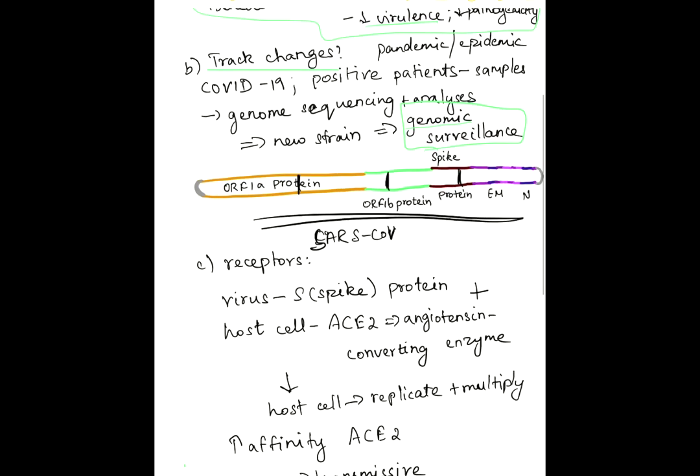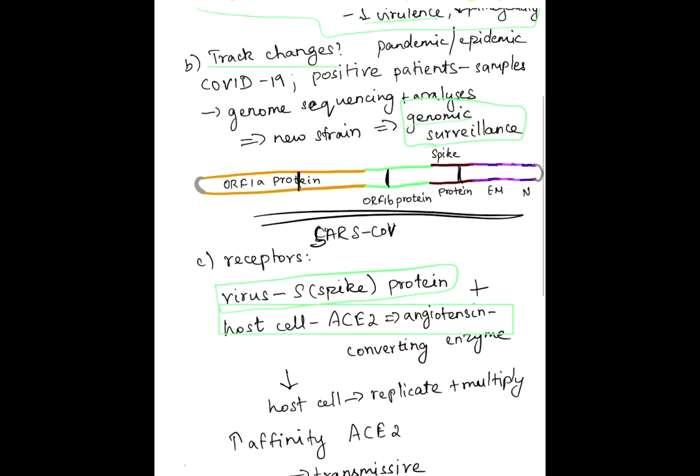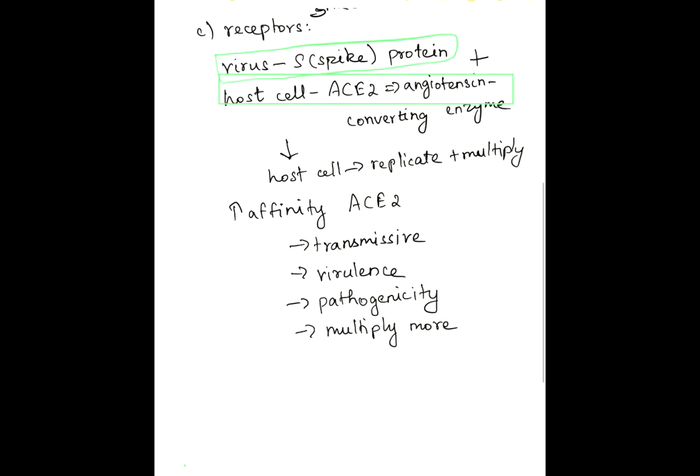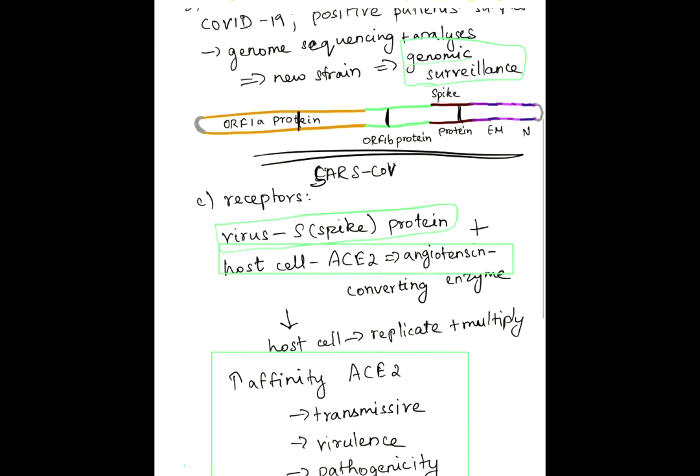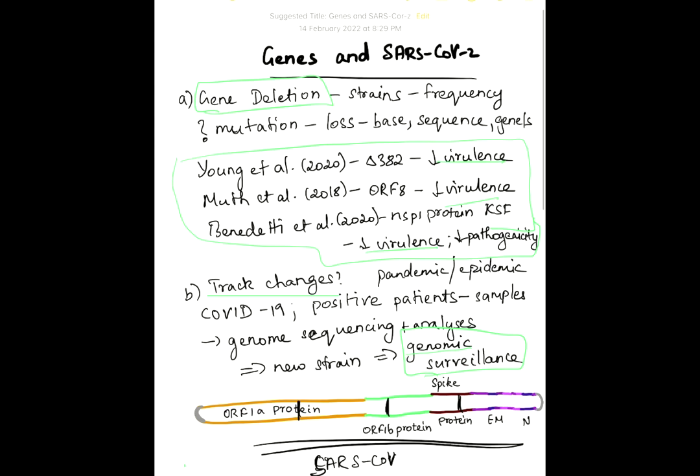Finally, we talked about the receptors. The receptor on the virus is called the S or spike protein, and the receptor on the host cell is called ACE2 or angiotensin converting enzyme. An increased affinity to ACE2 results in increase in transmissiveness, virulence, pathogenicity, and the virus will multiply more. Thank you for attending today's topic, and we will see you again in another topic.